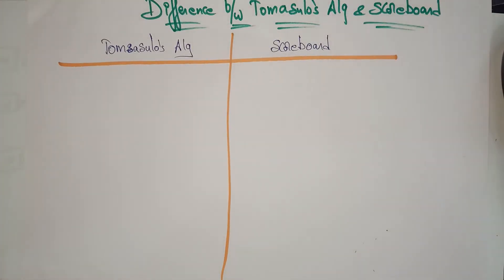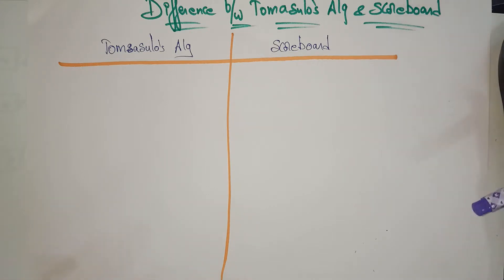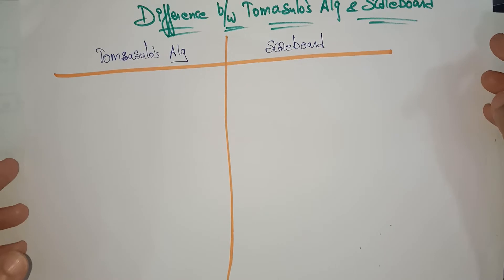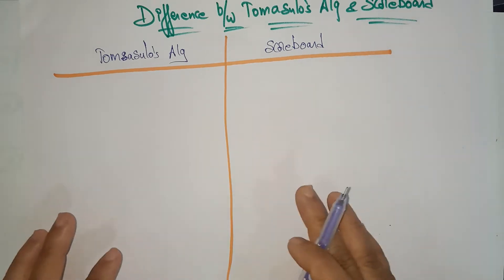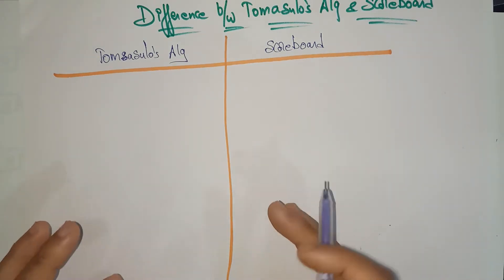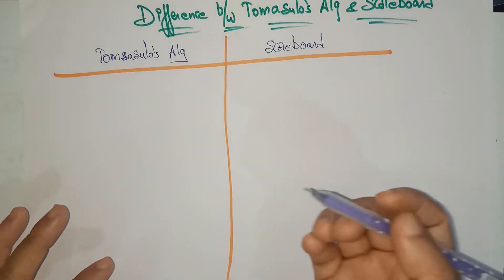Hi students, now let's see the difference between Tomasulo's algorithm and the scoreboard. In the previous videos I explained what exactly Tomasulo's algorithm and the scoreboard is with examples. Now let's have a comparison of the differences.